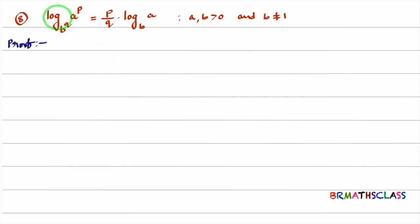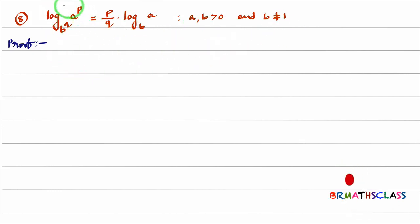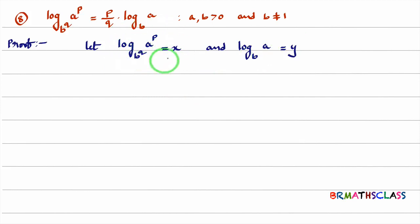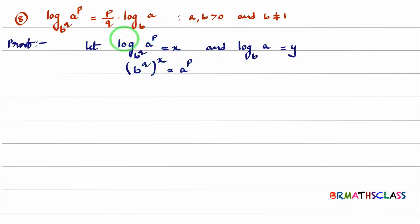See this eighth property: logarithm of a^p base b^q equals (p/q)·log(a) base b. Here a and b are positive real numbers, and we know that base cannot be equal to 1. To prove this, I'll take this expression as x and log(a) base b as y. From the definition of logarithm, base power x equals a^p, so b^q whole power x = a^p.